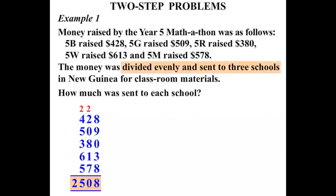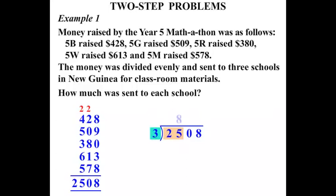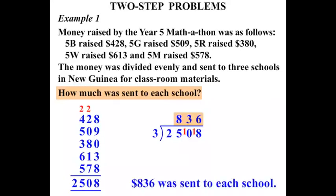Now, reading through: it was divided evenly and sent to three schools. So we divide $2,508 by three. Three into two will not go, three into twenty-five goes eight times — eight threes are twenty-four, one left over. Three into ten goes three times — three threes are nine, one left over. Three into eighteen goes six times. So we get eight hundred and thirty-six. Eight hundred and thirty-six dollars was sent to each school.